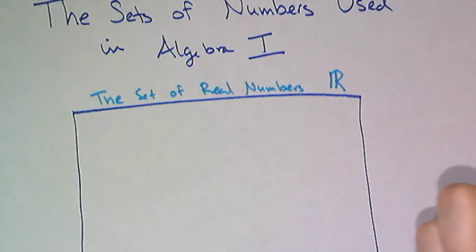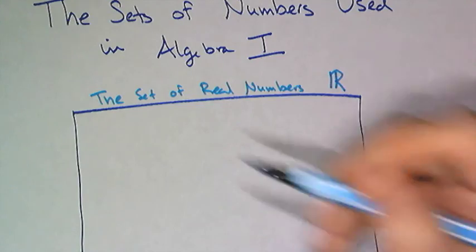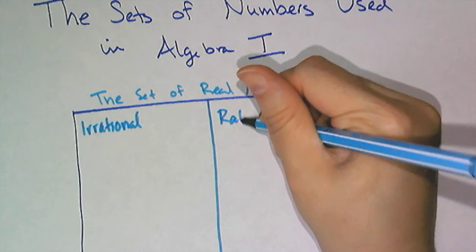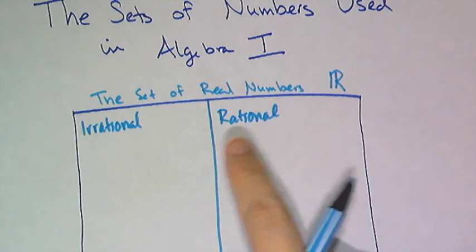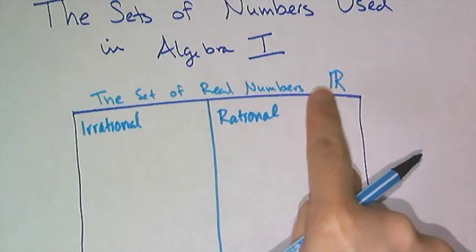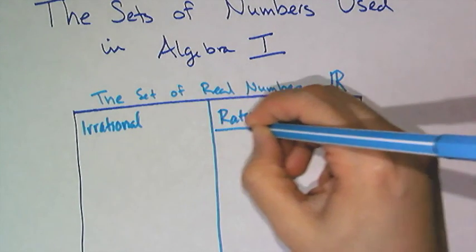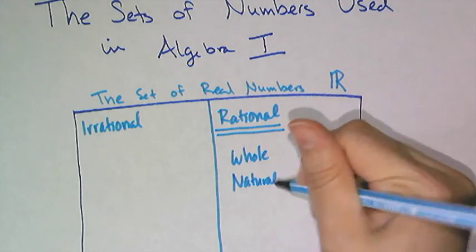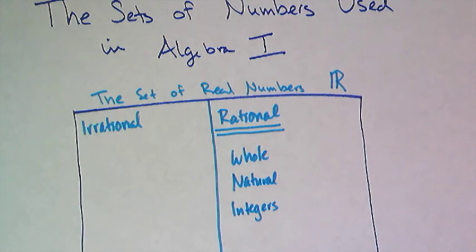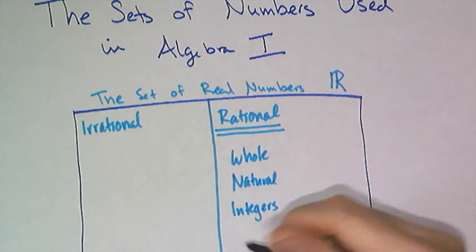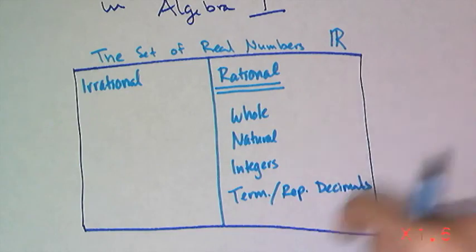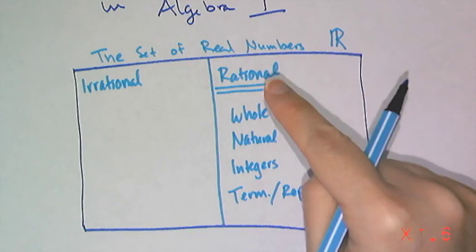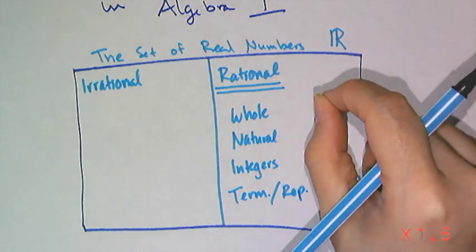There are really two different types of real numbers. You can be an irrational number or you can be a rational number. Can't be both. You are either rational or irrational if you are a real number. Now the rational numbers are the ones you've worked with the most. They include whole numbers, they include the natural numbers, they include integers and terminating decimals and repeating decimals. These are all examples of rational numbers.